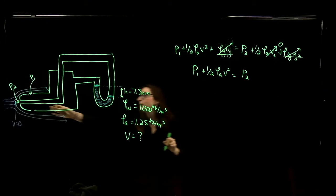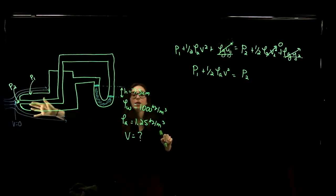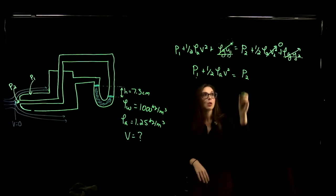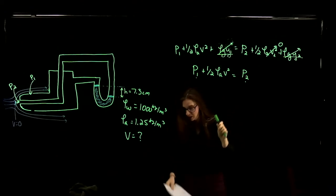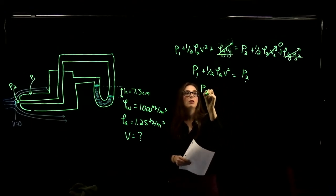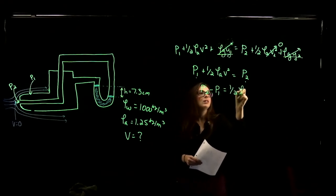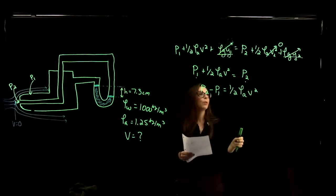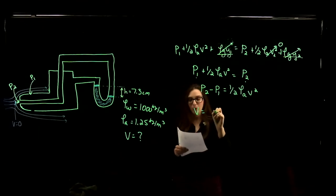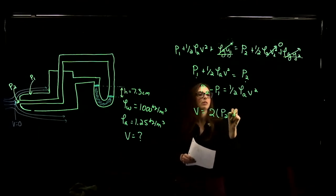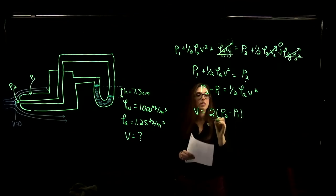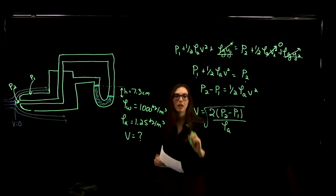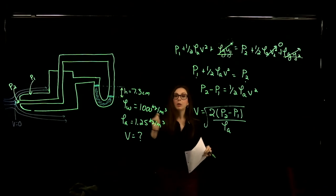The pressure is greater at the stagnation point because there's no flow — when fluid is flowing, pressure is reduced. Solving for P2 minus P1 gives: P2 − P1 = ½ρ_air·V². And solving for V, the airspeed equals the square root of 2·(P2 − P1) divided by the density of air. That's our key equation — it tells us how to derive the airspeed of the plane from the pitot tube.